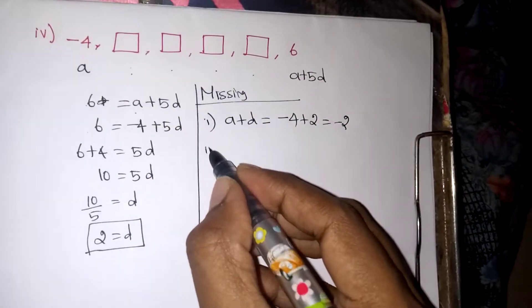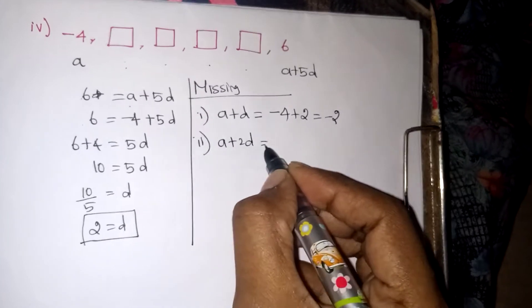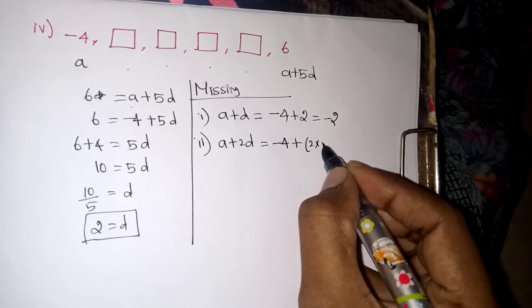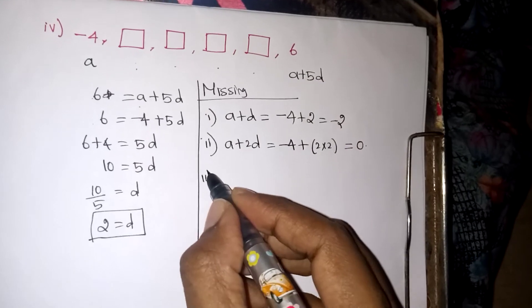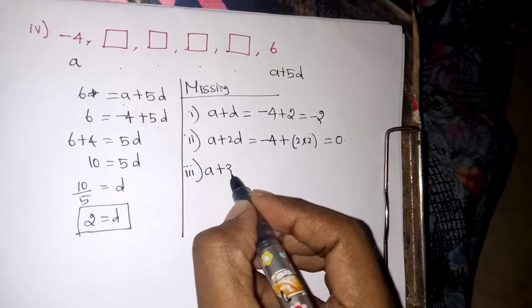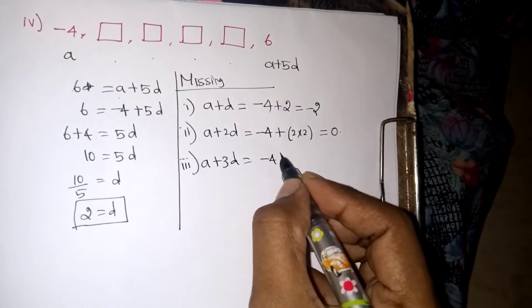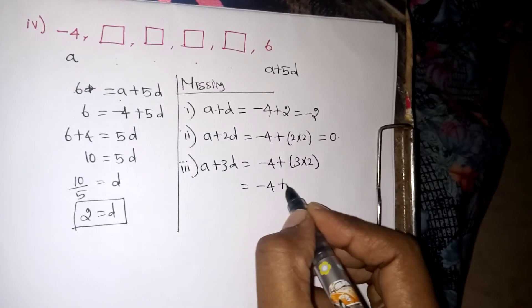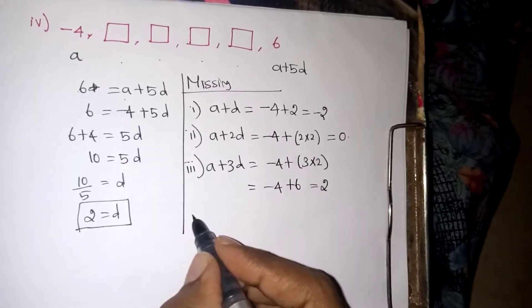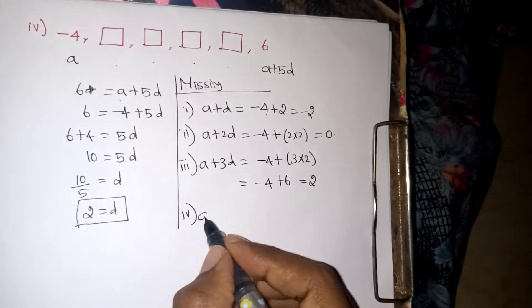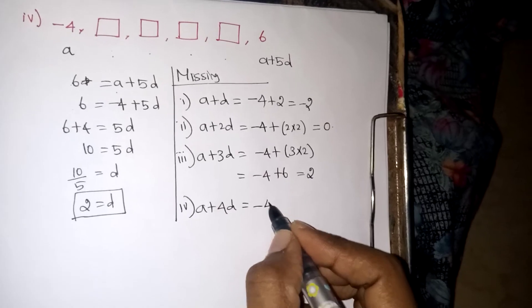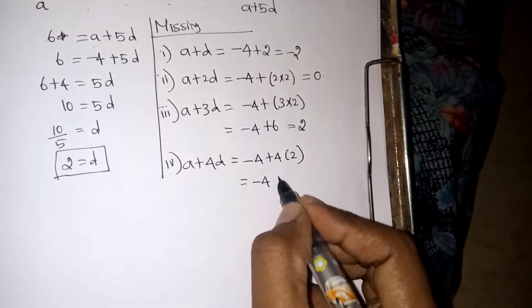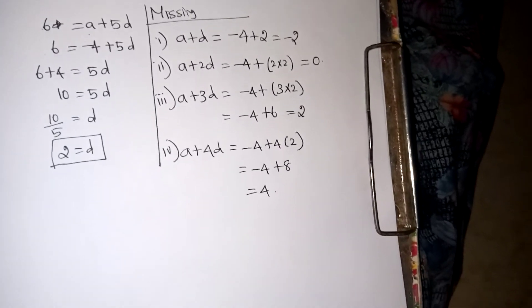The missing second box will be A plus 2D, which is equal to A value minus 4 plus 2 into 2. So minus 4 plus 4 will become 0. Next term A plus 3D, that is minus 4 plus 3 into 2, which is minus 4 plus 6 will give you plus 2. And next term will be A plus 4D, that is minus 4 plus 8, that will give you plus 4. So these are all the missing terms.